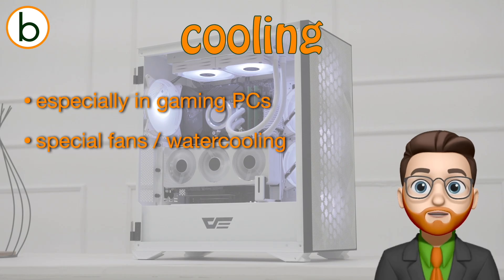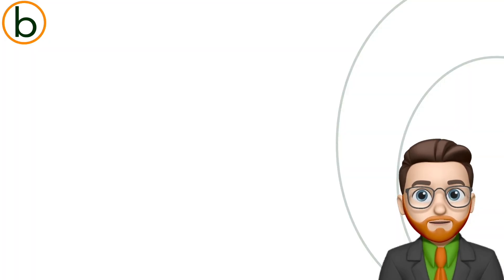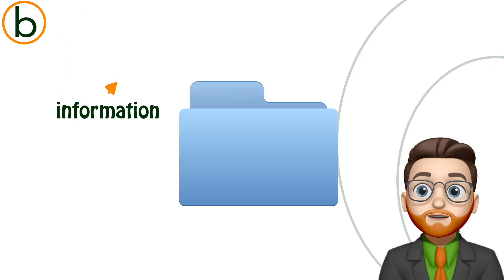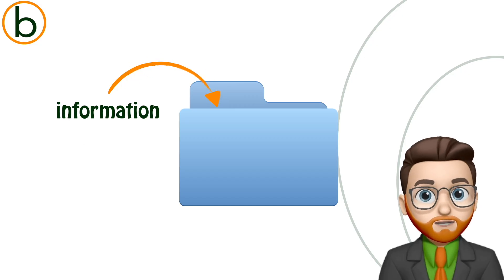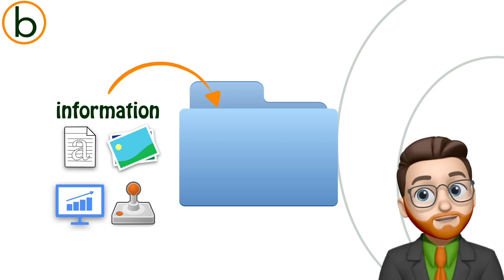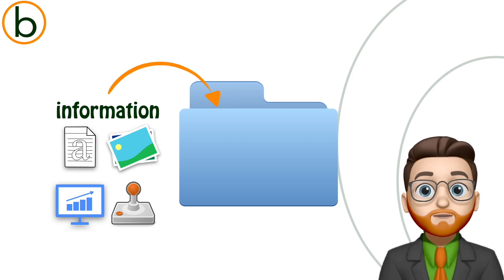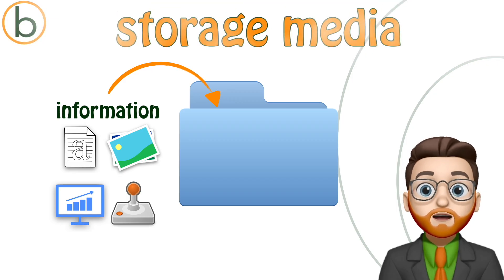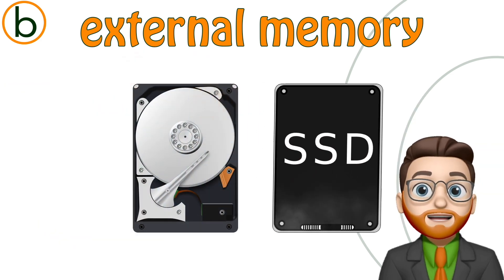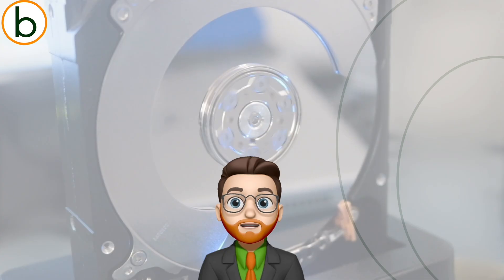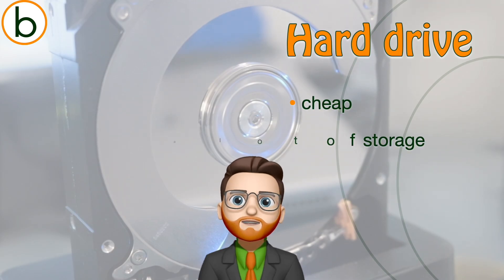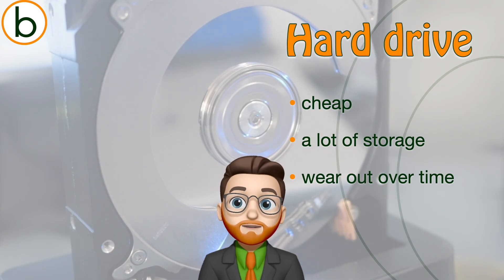When the processor has finished turning all that data into information, you of course need storage to keep it — your documents, photos, programs and games. Everything takes up a number of kilobytes, megabytes or even gigabytes, and they are stored on storage media, or external memory. The two most common storage types are hard drives and solid-state drives, or SSDs. Traditional hard drives are relatively cheap and offer a lot of storage, but they tend to wear out over time because they have moving parts inside.